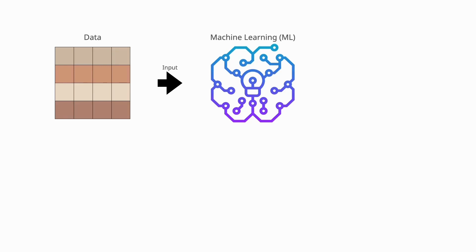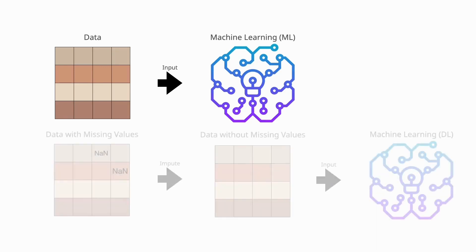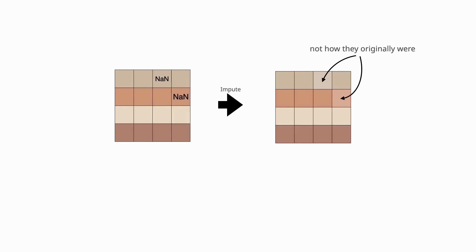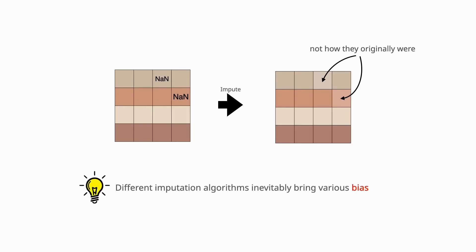Some values in a dataset may go unrecorded, necessitating imputation before feeding them into machine learning models. However, these imputed values are estimated and inevitably introduce bias.